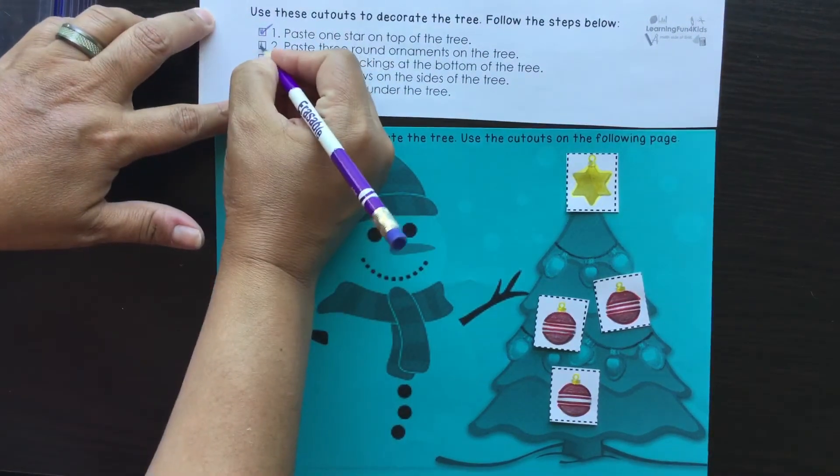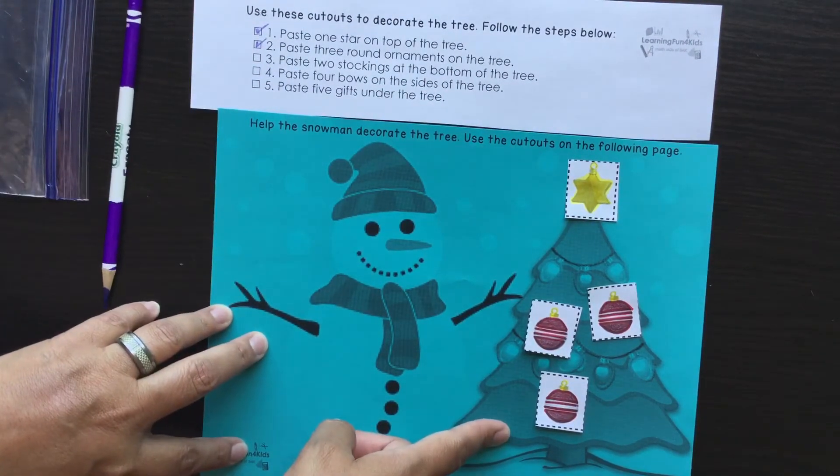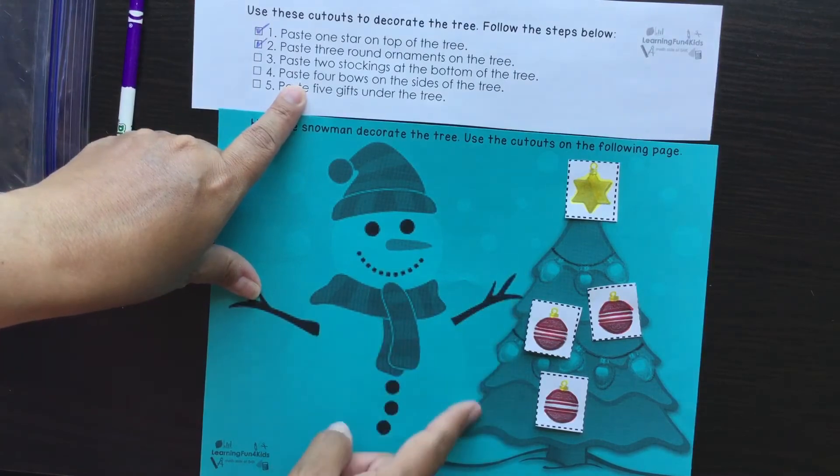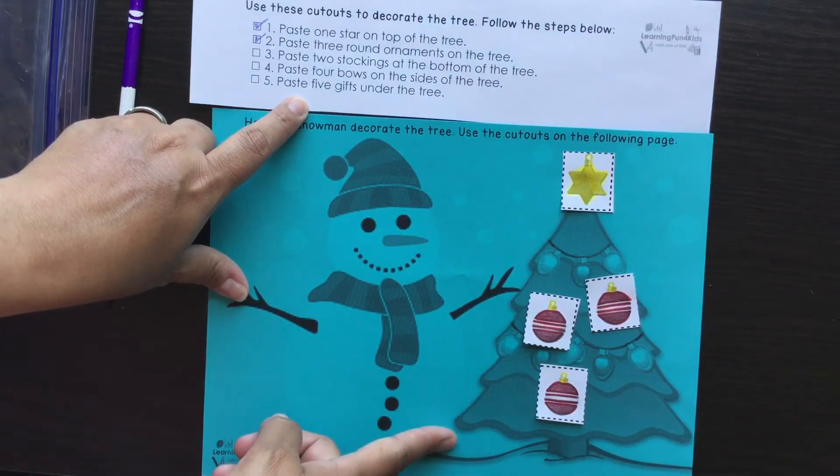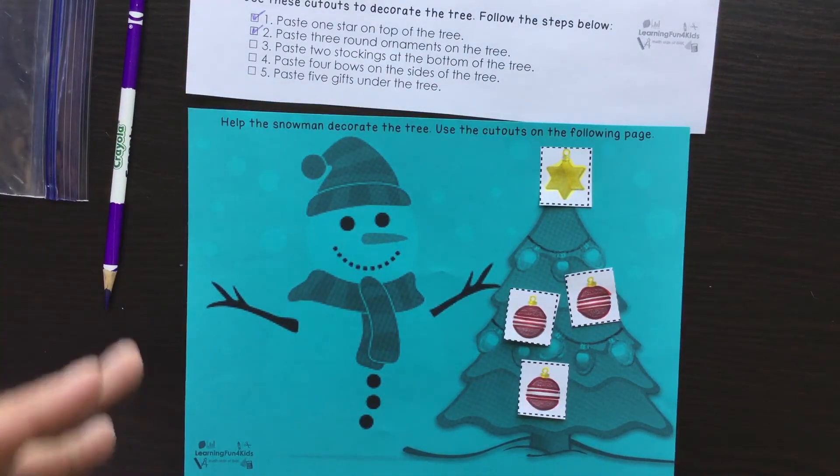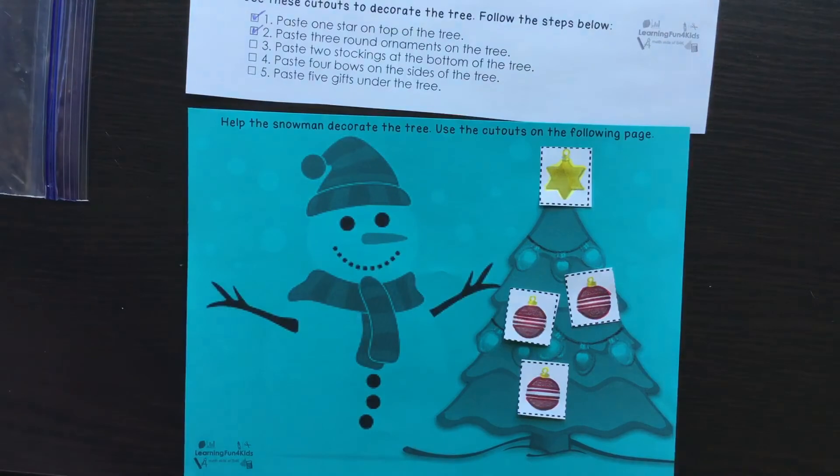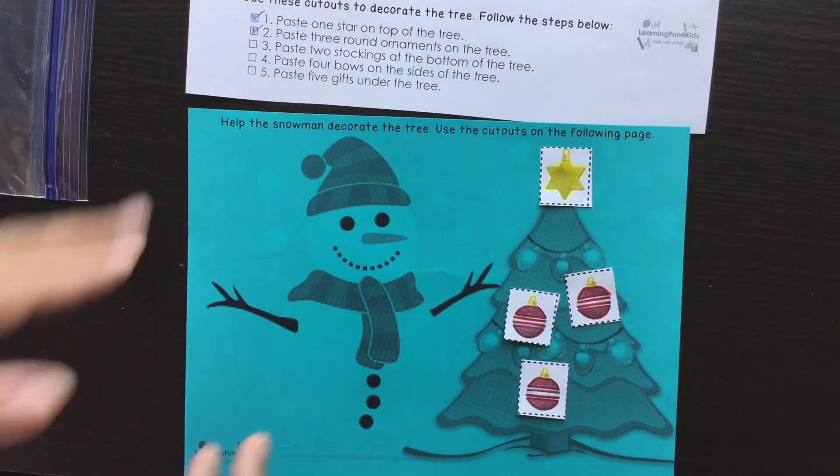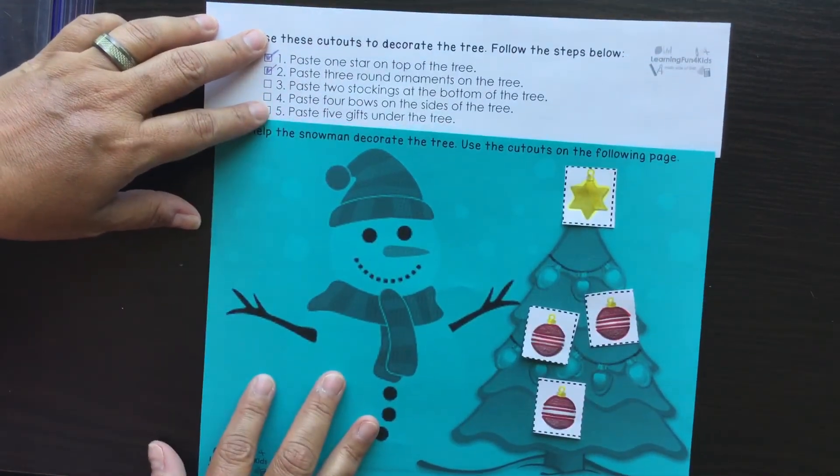We completed task number two, and then the next ones are to paste two stockings at the bottom of the tree, and then to paste four bows on the side of the tree, and to paste five gifts under the tree. So it has multiple instructions there and it has multiple ways that you can use this activity, not just only numbers but you have positions, location, and then speaking of listening, actually listen to instruction, that is a very valuable skill to learn. So that is one way to start introducing numbers, number sense, grouping, and any other type of math concepts that you want to start doing with your kiddos.